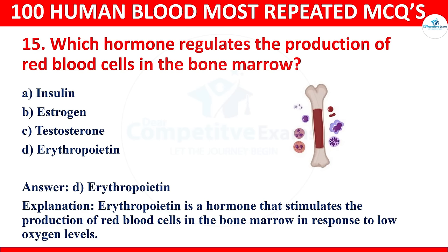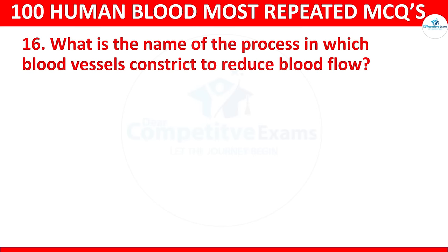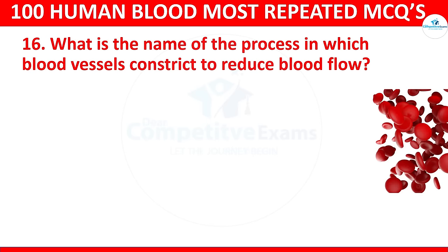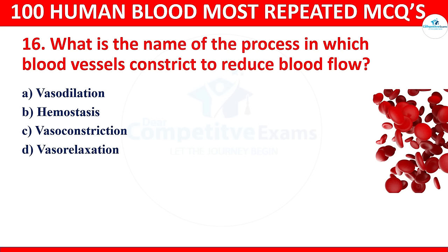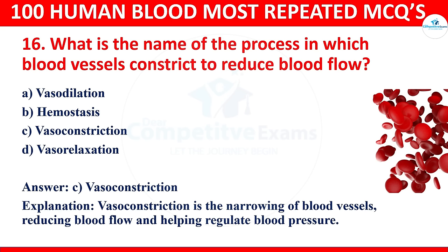Question 16: What is the name of the process in which blood vessels constrict to reduce blood flow? Options: hemostasis, vasodilation, vasoconstriction, or vasorelaxation. The correct answer is vasoconstriction. Vasoconstriction is the narrowing of blood vessels, reducing blood flow and helping regulate blood pressure.